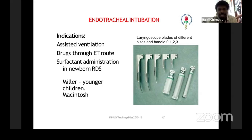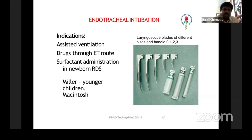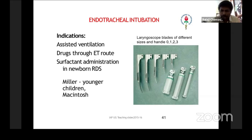There are two types of blades: straight and curved. The straight blade is the Miller's blade, used for younger children. The curved blade is the Macintosh blade, used for adults and older children. So Miller's blade is straight, Macintosh blade is curved. Using the laryngoscope, we insert the endotracheal tube. Endotracheal tubes are basically PVC curved tubes with an adapter at the top end.